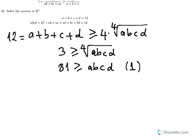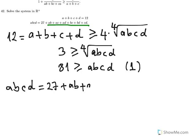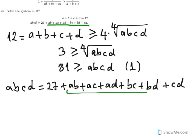Let's call this inequality (1), because we'll get also the opposite one, so it will turn out that ABCD equals 81. Now, if we apply the arithmetic mean–geometric mean inequality in the second equation, for the six pairwise product terms AB, AC, AD, BC, BD, CD, we'll have: ABCD equals 27 plus AB plus AC plus AD plus BC plus BD plus CD. For just these six terms, I will apply the AM-GM inequality.